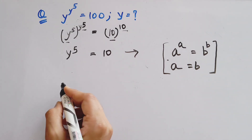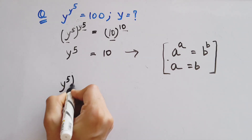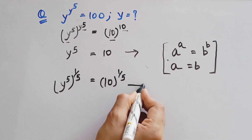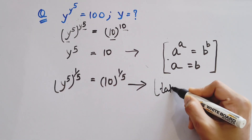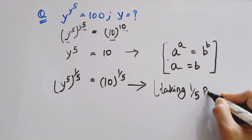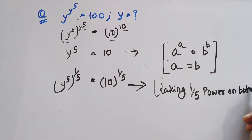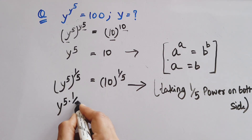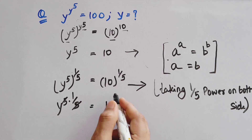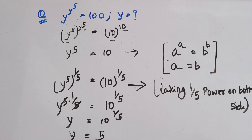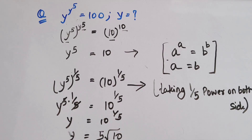We'll take 1 by 5 as power on both sides. So y to the power 5, whole to the power 1 by 5, equals to 10 to the power 1 by 5. Taking 1 by 5 power on both sides, y to the power 5 into 1 by 5 — the 5 cancels — and here 10 to the power 1 by 5. So y equals to 10 to the power 1 by 5, which is the 5th root of 10. This is our answer.